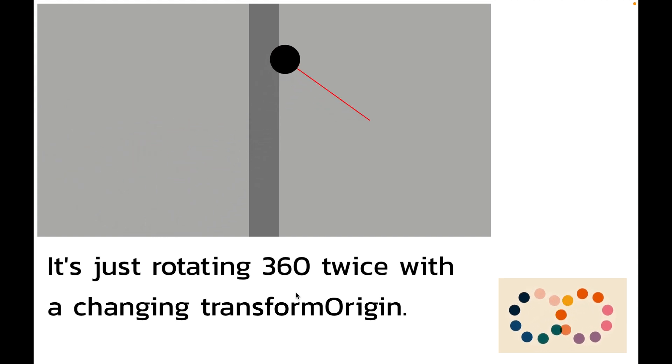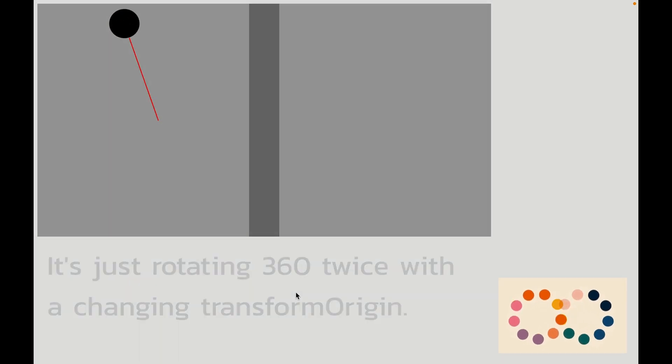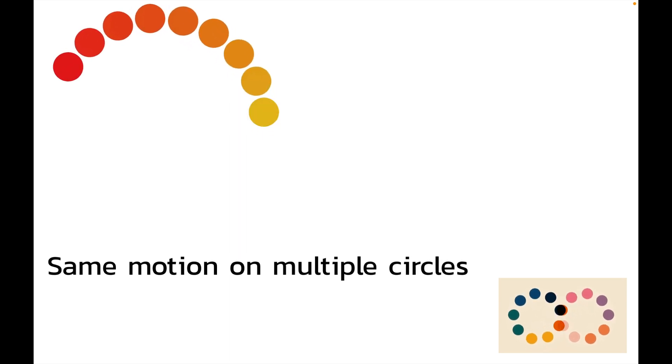So it's literally just doing two rotations, and if we understand how this one circle is moving, it's not going to be too difficult to apply the same motion to multiple circles.